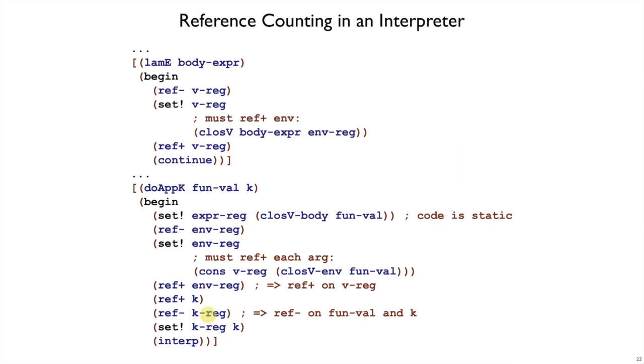Now there's a subtlety here. We had to do this ref plus and this ref minus in that order. Because if we did a ref minus on kreg first, then it goes away. Maybe k goes away as well. So we need to be careful to increment and say we are going to have a new reference to k even when kreg's object goes away, which will imply a ref minus on k and might cause it to be released. So that points out a subtlety of reference counting. You have to be careful not only to have all the ref minuses and ref pluses there, but get them in the right order.